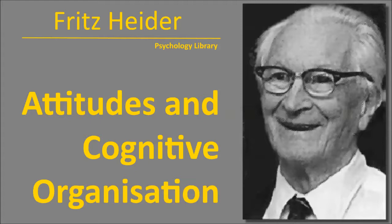Lewin's three cases of inter-conflict rest on implications. Approach to a positive valence may imply withdrawal from another positive valence. Withdrawal from a negative valence may imply approach to another negative valence. Approach to a positive valence may imply approach to a negative valence if both are located in the same region. Analogously, one can speak of three cases of outer conflict between persons. P U X may imply O U X — if U means ownership and both want X, conflict or competition will arise. Conflict also appears if P and O want to get away from X, but only one can do so. Lastly, if P likes X and O hates it, but P and O have to move together — e.g., in marriage — they can either both have X or both not have it.